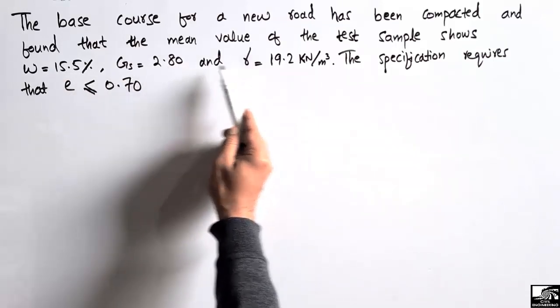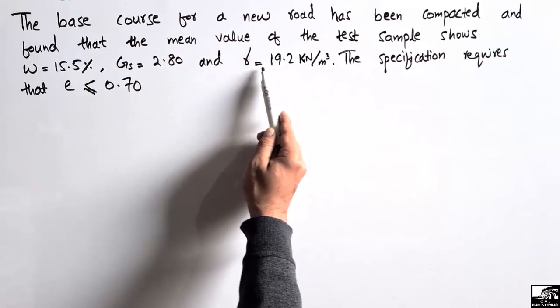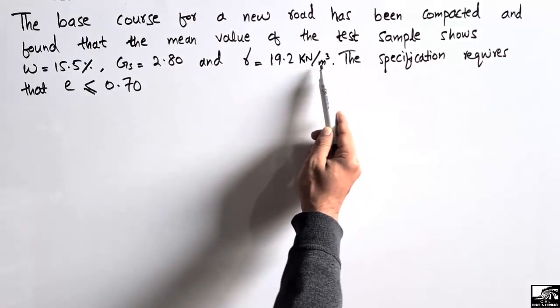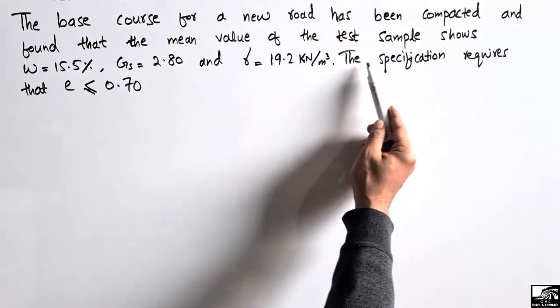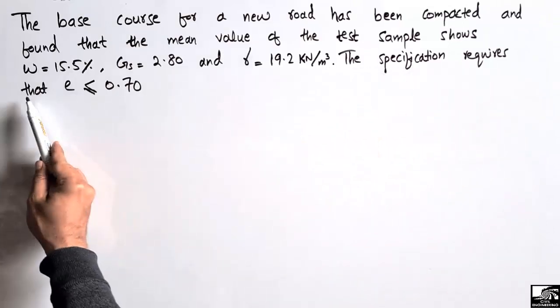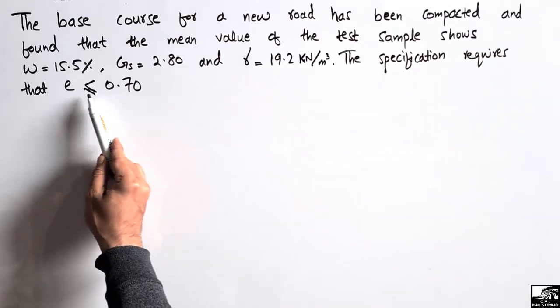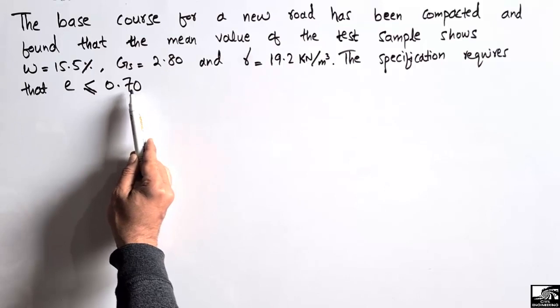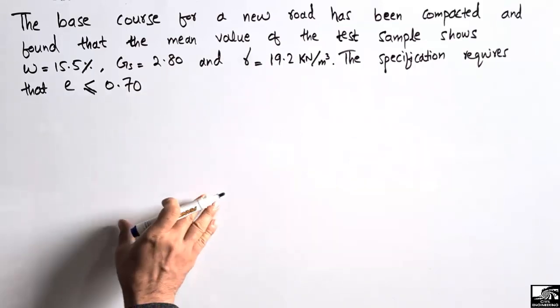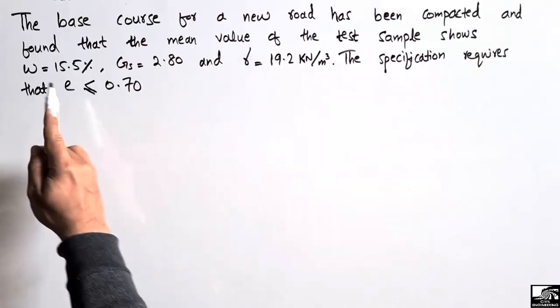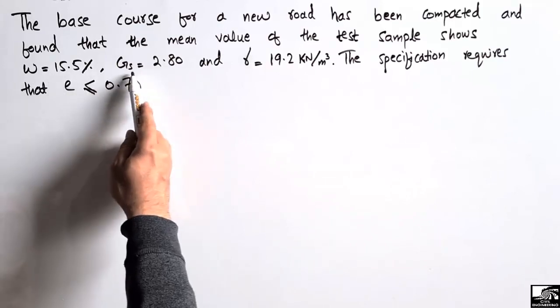The specification requires that void ratio should be less than or equal to 0.70. This problem gives the data of water content, specific gravity, and unit weight of the soil used for the base course of a new road.